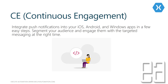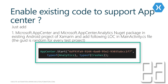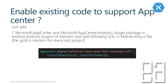To enable your existing code to support App Center, you simply add the Microsoft App Center and Microsoft App Center Analytics NuGet packages to your Android or iOS Xamarin project. Then add the following line of code: AppCenter.Start with your app GUID and then Analytics and Crashes types. Add this line within the MainActivity.cs file and you're good to go.